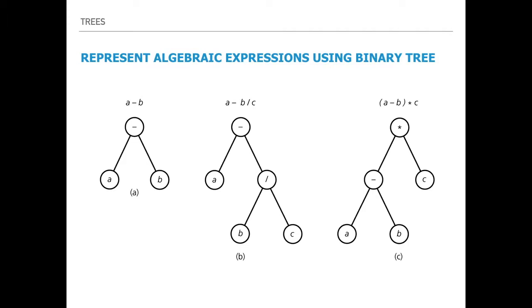For an expression like (a minus b) multiplied by c, the star (multiplication) becomes the root because we use in-order traversal. Everything inside the parenthesis has high priority and forms the left subtree — meaning the compiler processes it first. The minus becomes the root of the left subtree with operands a and b, and c is on the right subtree under the star.